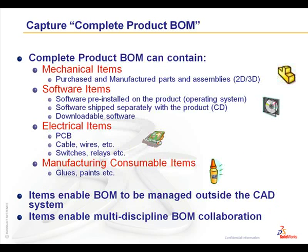These grouped items can be used to create the complete product bill of materials. Mechanical items, such as purchased or manufactured parts, whether in 2D or 3D, software items like a pre-installed operating system or a CD shipped with your product, electrical items, or even consumables like glues and paints can all be added to that bill of materials. This can be managed outside of the CAD system. Different bills of materials can also be put together for different areas of your company, such as purchasing, manufacturing, or the assembly team.